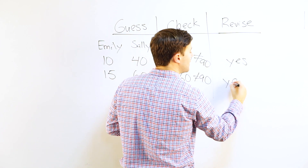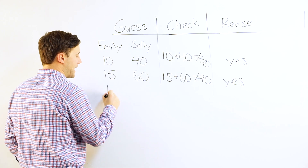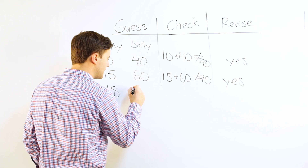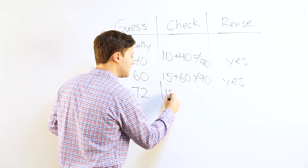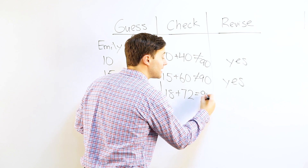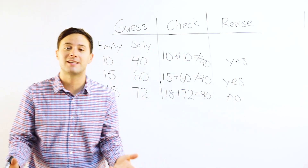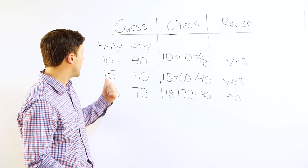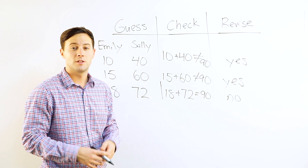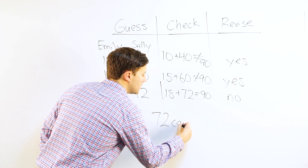I need to increase Emily a little bit more — not as much as before. I'm going to say 18. If Emily is 18, 4 times 18 is 72. 18 plus 72 actually equals 90. So I don't need to revise anymore — I'm done. I know that Emily has 18 cards and Sally has 72. My final answer: how many cards does Sally have? She has 72 cards.